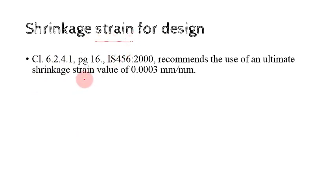Shrinkage strain for design: Shrinkage is usually expressed as linear strain, millimeter per millimeter. Empirical methods are available for the estimation of the shrinkage strain for the purpose of design. In the absence of reliable data, Clause 6.2.5.1, page 16, of IS 456:2000 recommends an ultimate shrinkage strain value of 3 × 10⁻⁴ mm per mm.